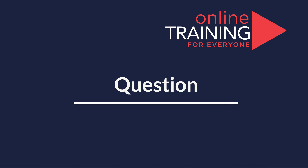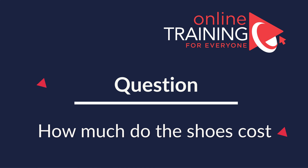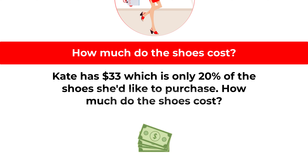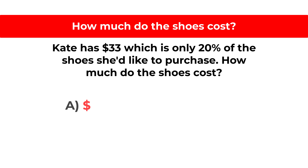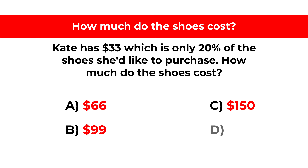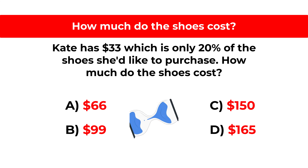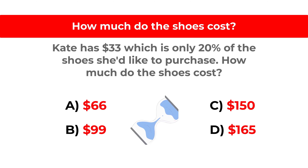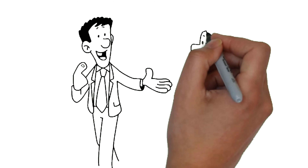Here's a question you frequently get on the test. Kate has $33, which is only 20% of the cost of shoes she would like to purchase. How much do the shoes cost? Your four choices: A) $66, B) $99, C) $150, D) $165. Give yourself 10 to 30 seconds depending on how well you are with math and percentages.